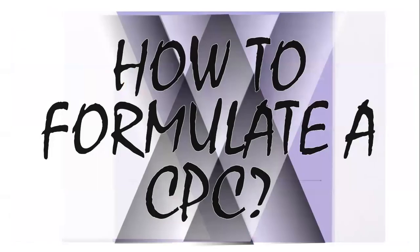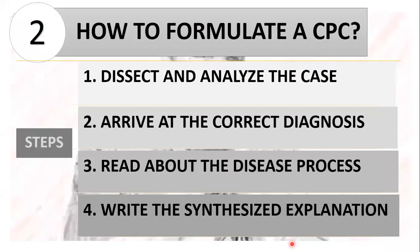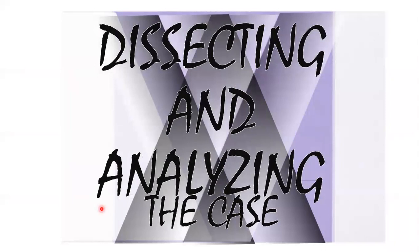Today, you'll be learning the step-by-step guide in formulating a good CPC. So here are the steps. The first thing that you have to do is to dissect and analyze the case, and from there you would be able to arrive at the correct diagnosis. Once you have the correct diagnosis, you would then be able to read extensively about the disease itself, and after reading a lot, we could then write the synthesized explanation for the correlated clinical presentation and the disease process. Let's go to the first step, which is to dissect and analyze the case.